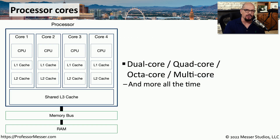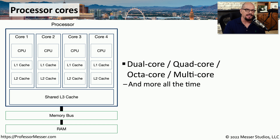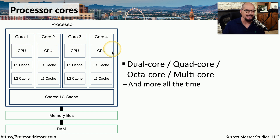We often refer to a CPU, or central processing unit, as a single monolithic device — all the information goes into the CPU and then we get results out of it. But inside the CPU, there are a lot of individual components. The main processing of a CPU occurs on the processor core, and generally in today's CPUs there are multiple cores on a single physical CPU package. Sometimes we refer to these as dual-core, quad-core, or simply multi-core.